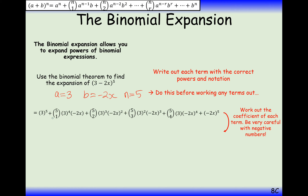Be very careful when simplifying with the negatives and the chooses — make sure you square all of the minus 2s inside the brackets. The final answer is 243 minus 810x plus 1080x squared minus 720x cubed plus 240x to the power of 4 minus 32x to the power of 5.